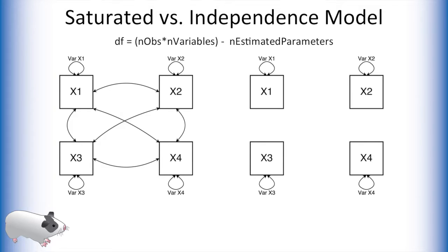The degrees of freedom for these models are calculated as such. We multiply the number of observations in a data set by the number of manifest variables in our model. We then subtract the number of estimated parameters. Let's assume we have 200 observations. Each of these models also has four manifest variables. What each model differs on is the number of estimated parameters.